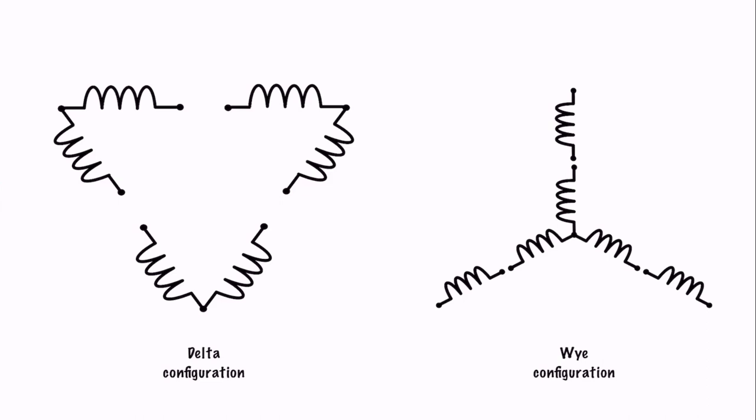It's a nine-lead motor because we have two windings per phase. We have six windings in total, and each winding has a lead, giving us nine leads in total. We have ourselves a Y configuration connection with nine leads — it's a nine-lead motor connection, and it's very, very common.